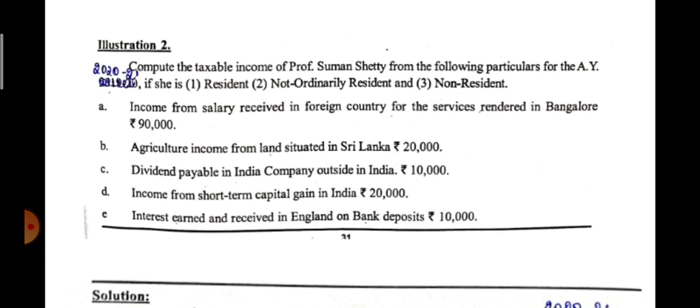What we are supposed to calculate here is the taxable income of Professor Suman Shetty based on her different residential status. We need to calculate taxable income if she is resident, not ordinary resident, and non-resident. Point A: income from salary received in a foreign country for the services rendered in Bangalore, rupees 90,000. Before going through the problem, in case of incidence of tax liability two terms are very important: where the income is received and where it is earned.